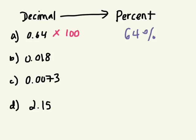Well, when you multiply by 100, what do you do with the decimal place? You move it to the right. How many times? One, two, because there's two zeros. So you end up at 64 decimal zero, which is just 64%. Okay, so to get from a decimal to a percent, all you need to do is multiply by 100.